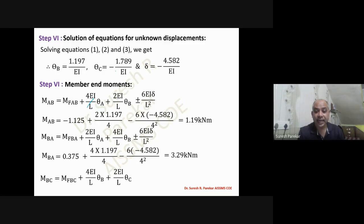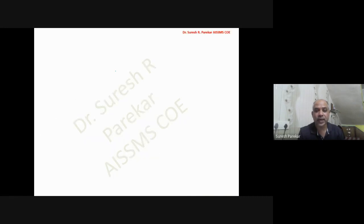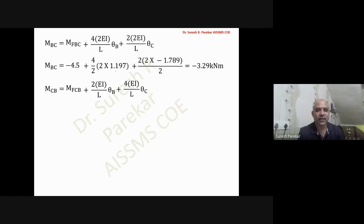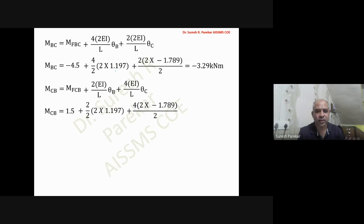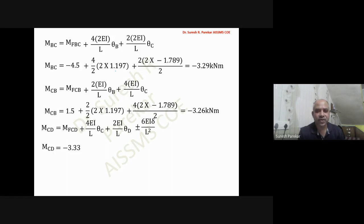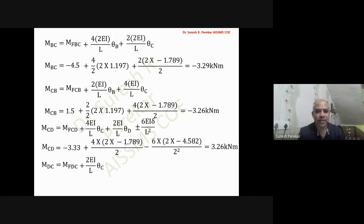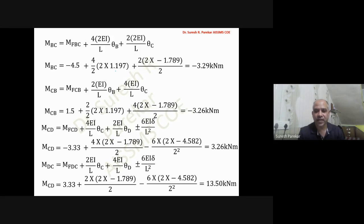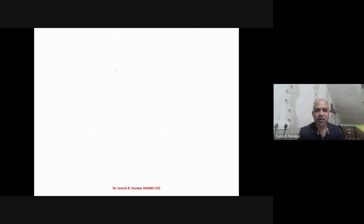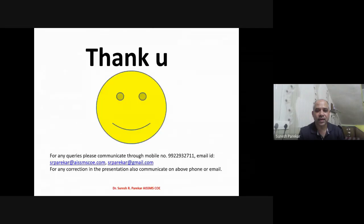For M_BC: Δ is zero (sway not applicable to beams), substituting θB and θC gives M_BC = minus 3.29 kN·m. For M_CD: θD = 0 (fixed support), giving M_CD = 3.26 kN·m. M_DC = 30.50 kN·m. All four problems using the stiffness method for frames are now complete.